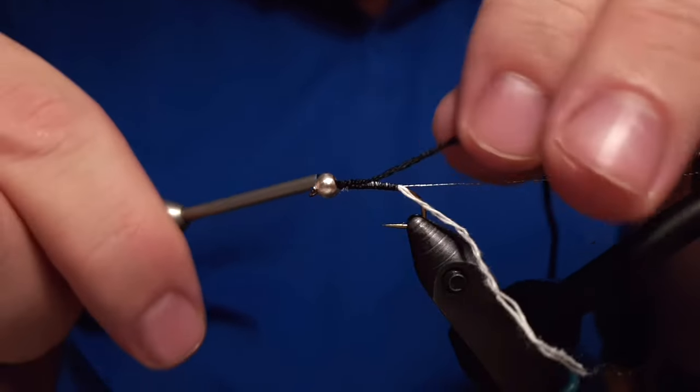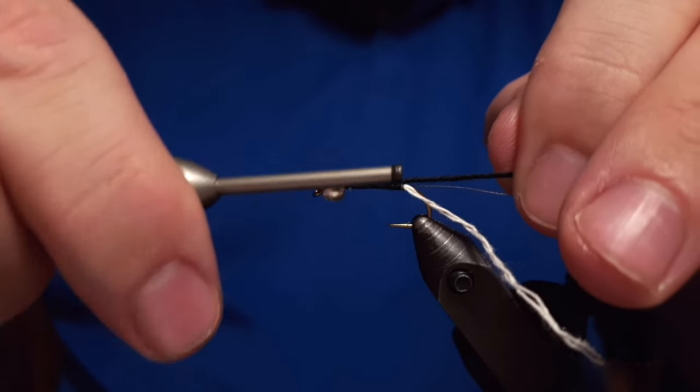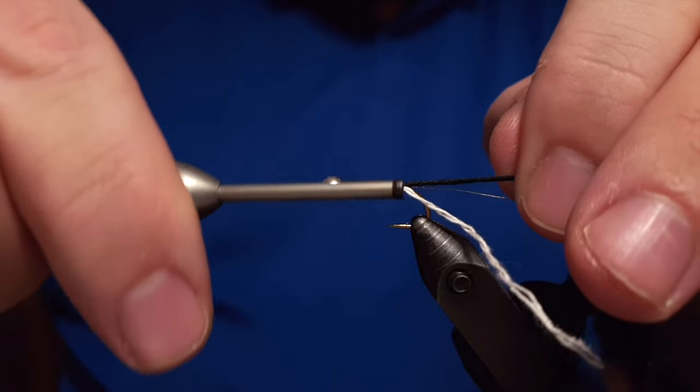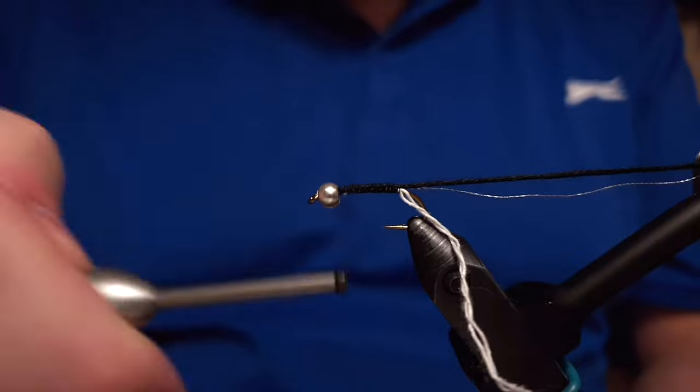On the other hand, you can tie this fly with variation of body colors - red, blue, pink, brown. Just play around with the colors.